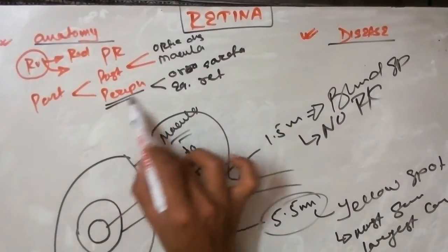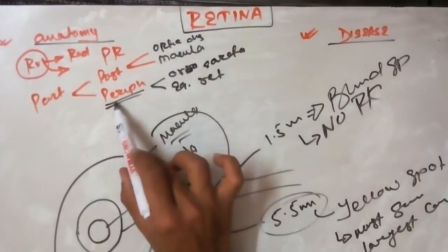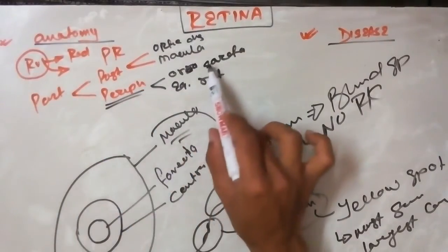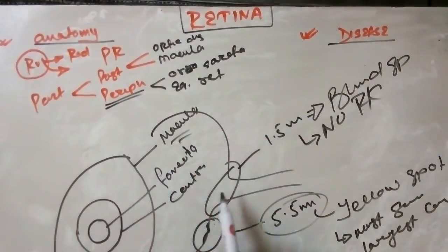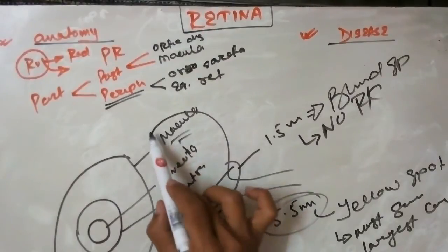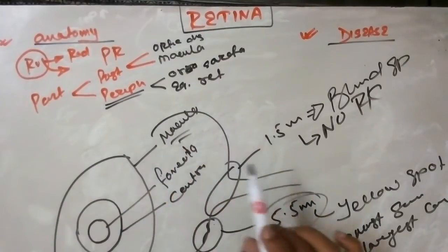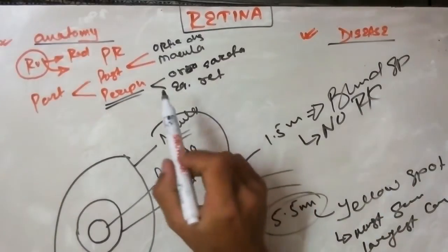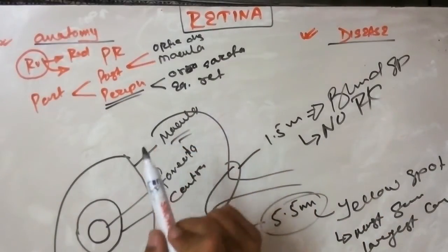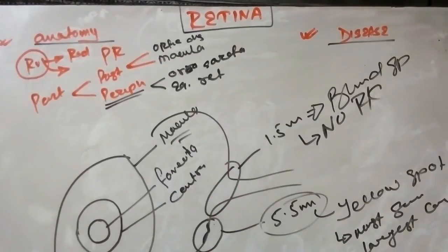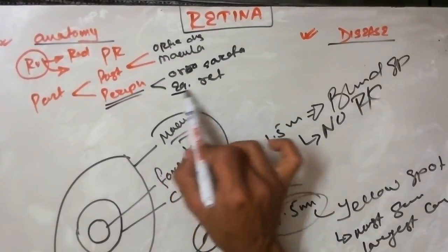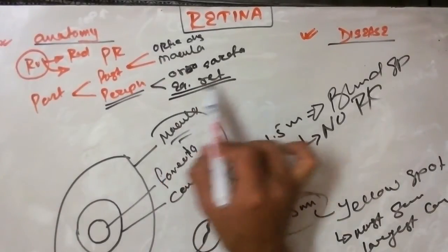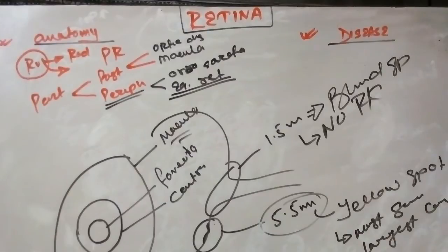The peripheral retina has the ora serrata, which is the anterior attachment for the retina, very strongly attached to the choroid along with the vitreous humor. The equator region of the retina also comes under the peripheral part of the retina.